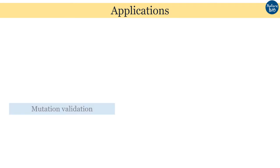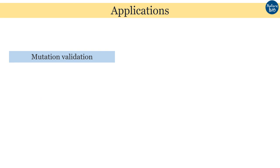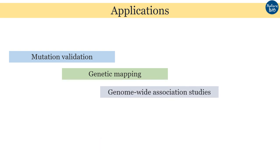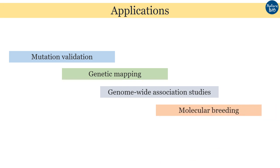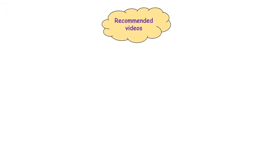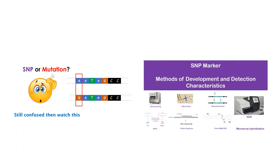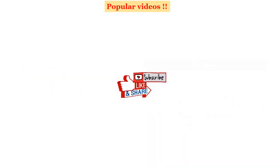Now coming to the applications of Tetra-Arms PCR: mutation validation, where you confirm whether a mutation is really present or not; genetic mapping, for determining the position of genes and DNA loci on chromosomes based on recombination frequency; genome-wide association studies, to establish marker-trait associations; and molecular breeding, for selection and development of better varieties. More information about SNPs, how they differ from mutations, and different SNP detection techniques can be found in my videos linked in the description below.